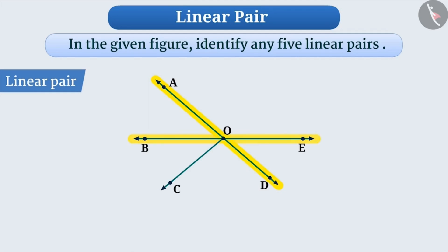You can see that ray OB forms a linear pair at AD. That is, angle AOB and angle BOD. Similarly, ray OC forms a linear pair at AD, that is, angle AOC and angle COD.